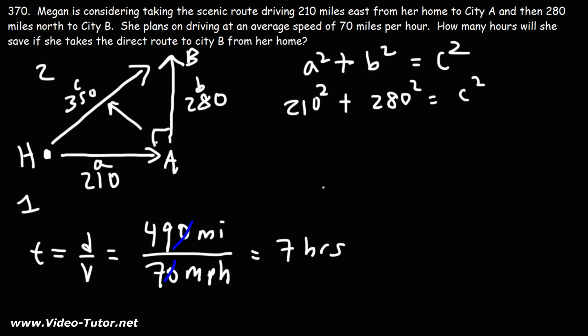210 squared is 44,100. 280 squared is 78,400. And let's add those two numbers. 44,100 plus 78,400 is 122,500.